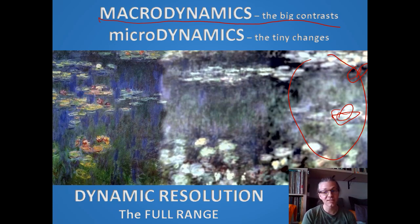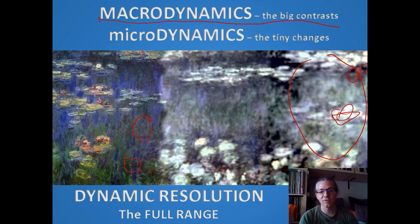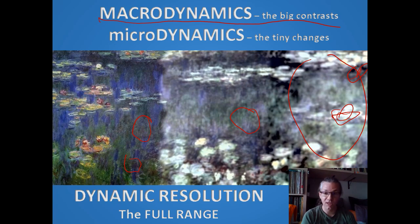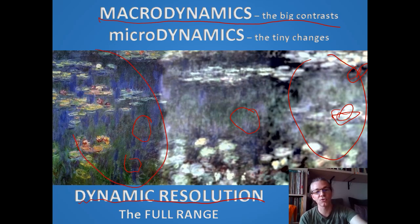But excellent macrodynamics doesn't tell you whether that same system may be pretty bad at microdynamics. With microdynamics you can see the shading, the finer details. A better solution in the middle already has some microdynamic resolution — you can tell what's going on at the detail level too. But it still doesn't have full dynamic resolution, which is when you see the entire picture and it just comes to life.